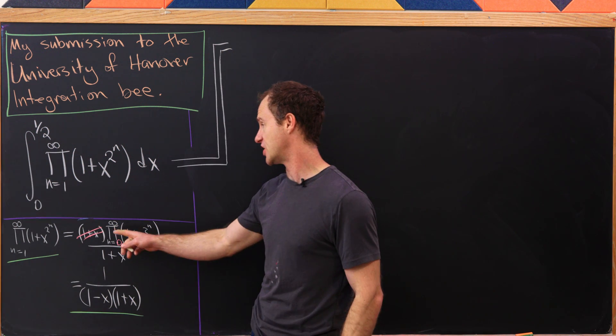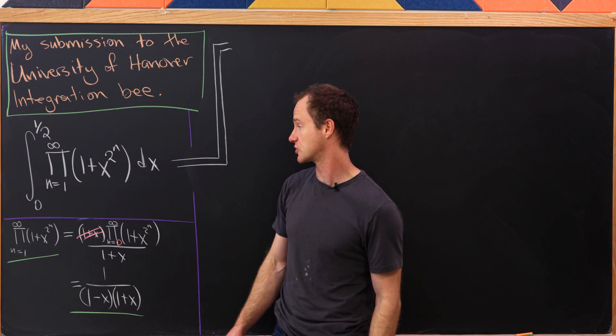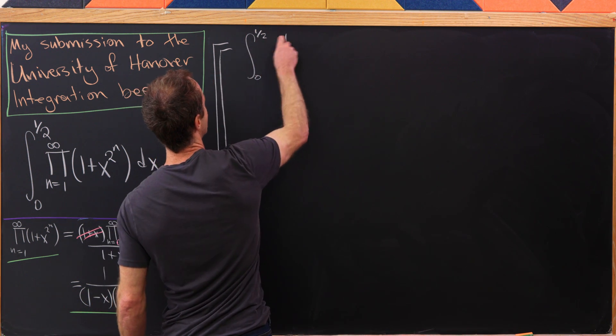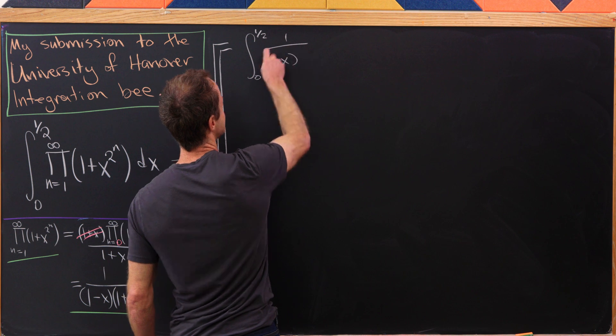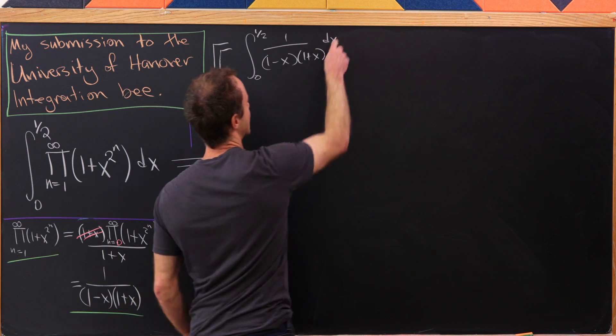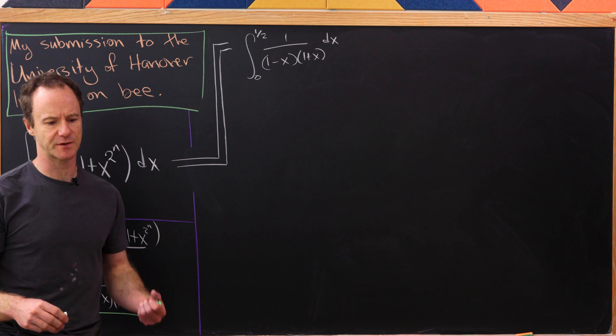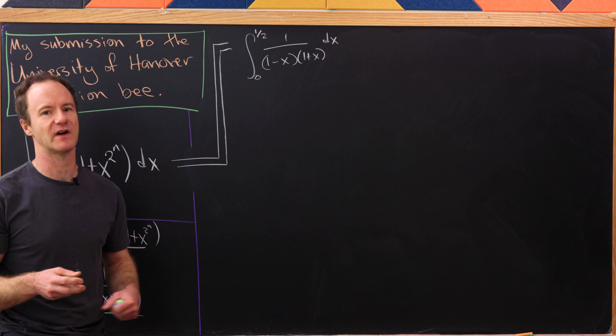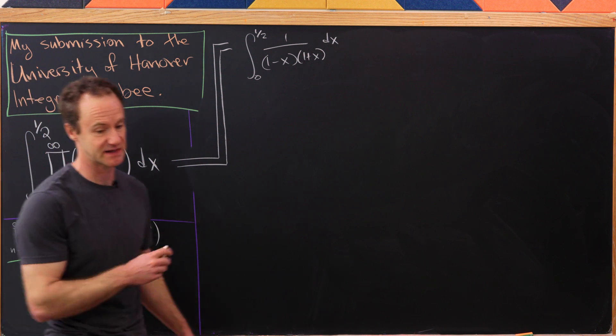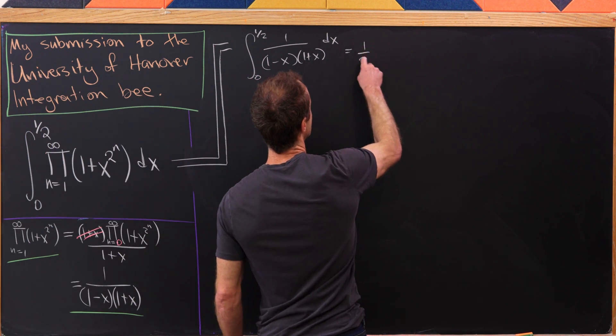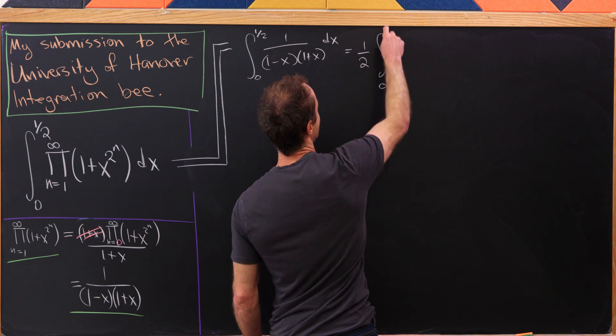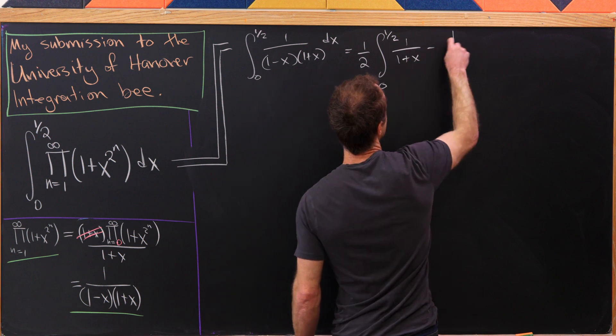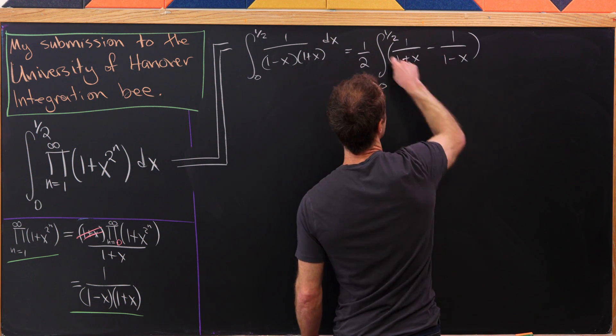We've been able to change our integrand into the following nice rational function. We've got the integral from 0 to 1/2 of 1 over 1 minus x times 1 plus x dx. The standard strategy here is to use partial fraction decomposition. I'll just jump to this being decomposed: I've got 1/2 the integral from 0 to 1/2 of 1 over 1 plus x minus 1 over 1 minus x dx.